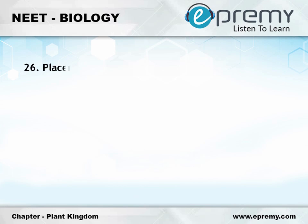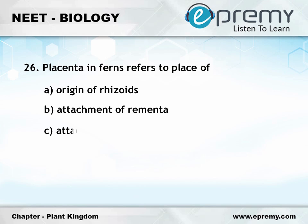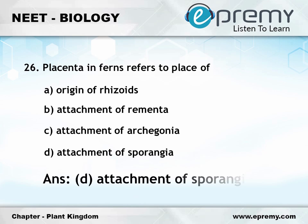Question number twenty-six: placentation in ferns refers to a place of option A origin of rhizoids, option B attachment of ramenta, option C attachment of archegonia, option D attachment of sporangia. The answer is option D attachment of sporangia. This is brought to you by ePremie.com.